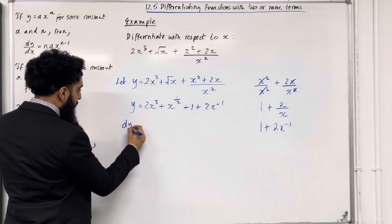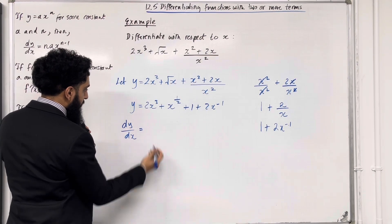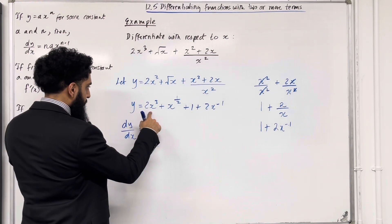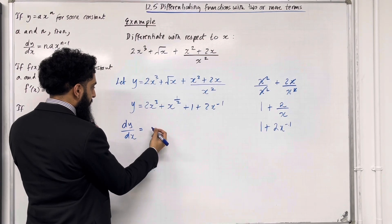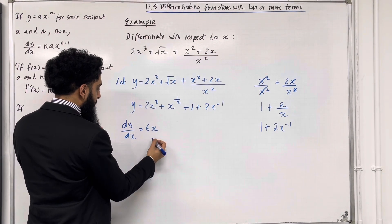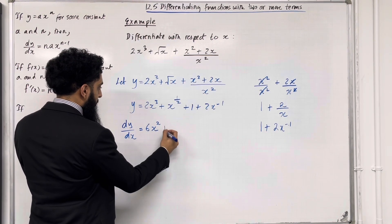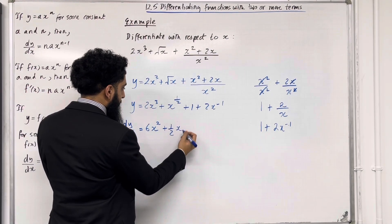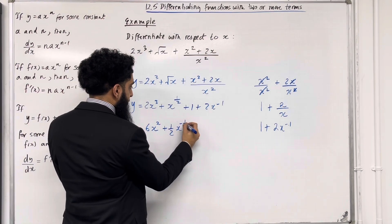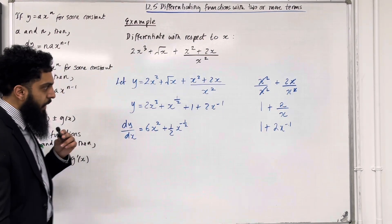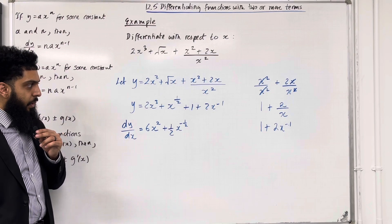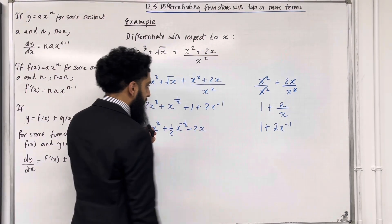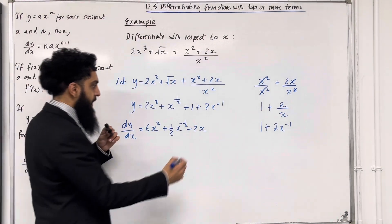Now I can work out dy/dx by simply using term-by-term differentiation. For the first term, bring down the power: 3 times 2 is 6, giving 6x². For the second term, bring down the power: ½ · x^(½ − 1) = ½x^(−½). The constant 1 differentiates to 0. For the next term, bring down the power: −1 · 2x^(−1−1) = −2x⁻².